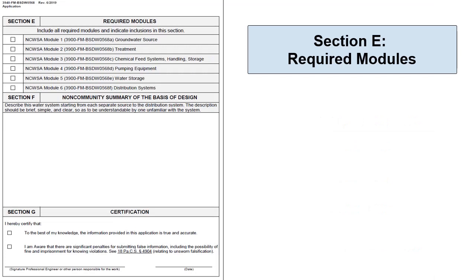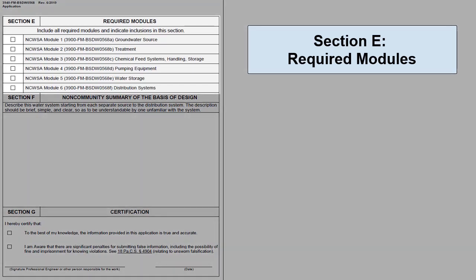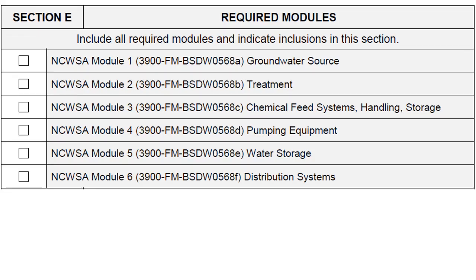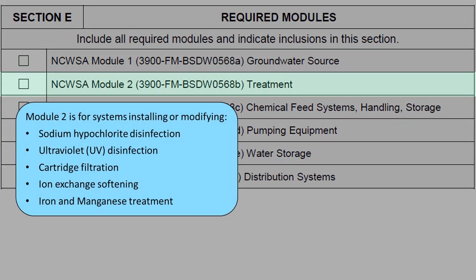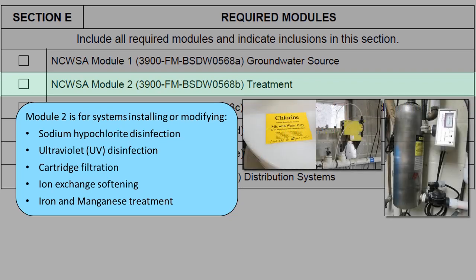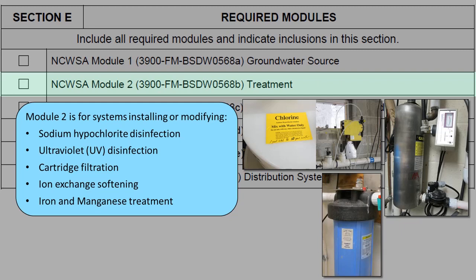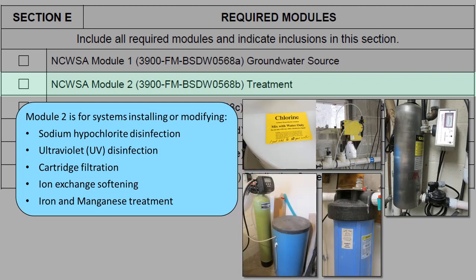Section E, Required Modules, is a checklist of modules that are to be included in the application package. The applicant should check and include all applicable modules. Module 1, Groundwater Source, shall be included for all new groundwater sources. A new source is a water supply source that does not have a valid existing DEP permit, BDF approval, or non-community approval. Module 2, Treatment, shall be included for systems installing or modifying sodium hypochlorite disinfection, ultraviolet light disinfection, cartridge filtration, ion exchange softening, and iron and manganese treatment. Systems installing treatment not listed should contact the regional PA DEP office for those requirements.